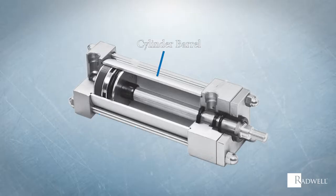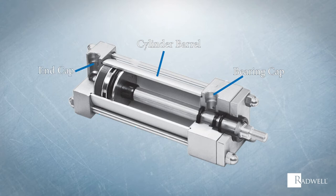Cylinder barrel, bearing cap, end cap, piston, and piston rod are the key components that make up a typical pneumatic cylinder.